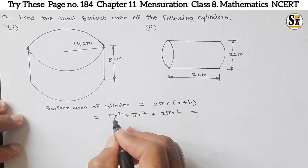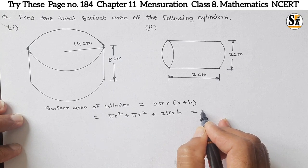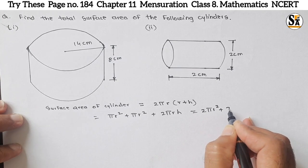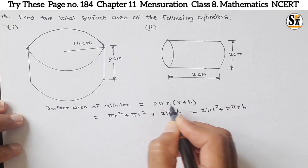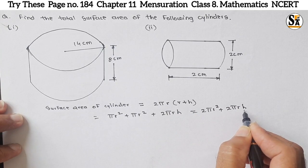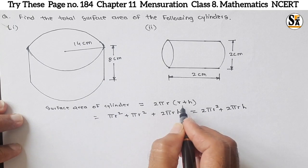I will further write here: πr² + πr² is 2πr² + 2πrh. Take common 2πr here, remaining will be r and h. So this is the formula for surface area of cylinder.